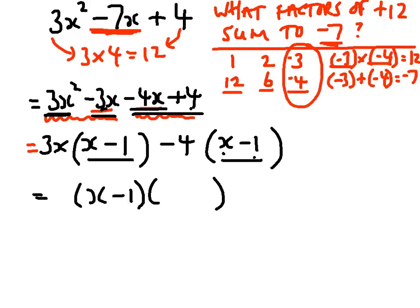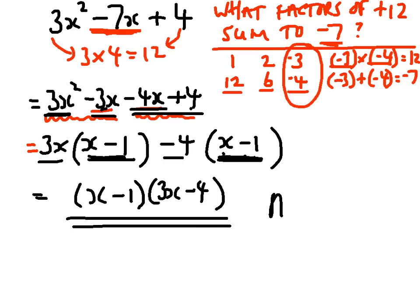And the x minus 1 is a common factor. I've got minus 4 lots of x minus 1 and 3x lots of x minus 1. So x minus 1 is a common factor. And then I've got the 3x over here and I've got the minus 4 over here. So that's going to be my other factor. So the factorized version is this. That would be my answer.